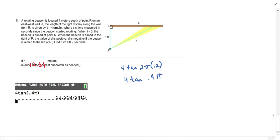This one looks scary with a lot of words, but it's not horrible. A rotating beacon is located 4 meters south of a point R on an east-west wall. D, the length of the light display along the wall from R, is given by 4 tan 2 pi T, where T is time measured in seconds since the beacon started rotating. When T is 0, the beacon is aimed at point R. When the beacon is aimed to the right of R, the value of D is positive. D is negative if the beacon is aimed to the left of R. Find D if T is 0.2 seconds.